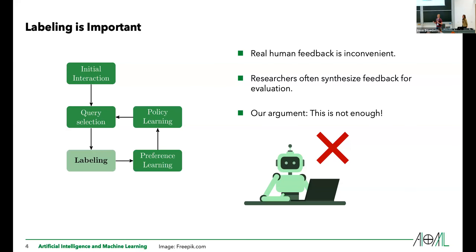This reinforcement learning from human feedback setting has many steps executed in a loop, and most of these steps are already quite well studied — such as how we select queries to present to the human, how we infer a policy, and how we learn from the preferences. We argue that the actual interaction with the human, the labeling aspect, is quite understudied. This is because it's hard to do research with real humans, so people usually synthesize feedback and take the human out of it. And we think this is problematic.